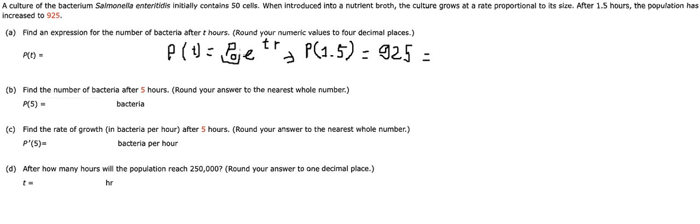The initial population is 50, so we put 50 in here: e^(t) where t is 1.5 and we have r. Now we divide both sides by 50, so we have 37/2 = e^(1.5r).